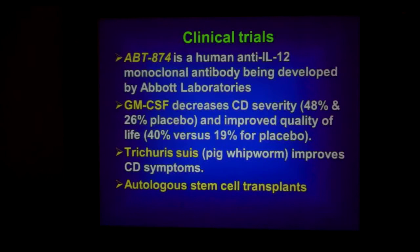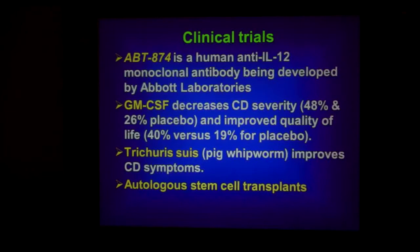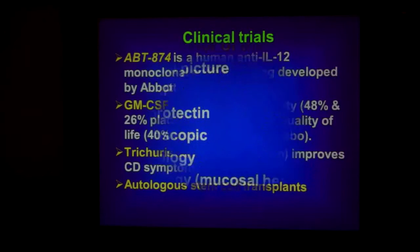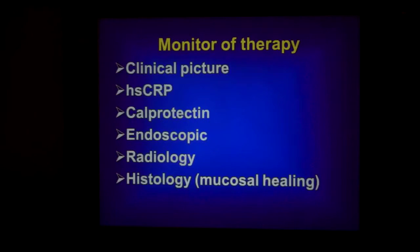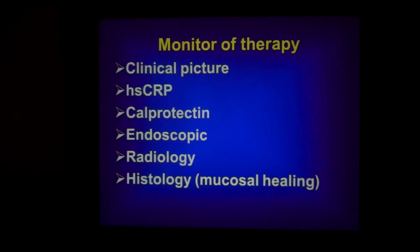There are also some clinical trials on granulocyte-monocyte colony-stimulating factors and autologous stem cell transplantation. For monitoring, assess clinical picture, diarrhea, rectal bleeding, C-reactive protein, and calprotectin levels every three months during therapy, endoscopy about every year, and radiology and histology for mucosal healing.